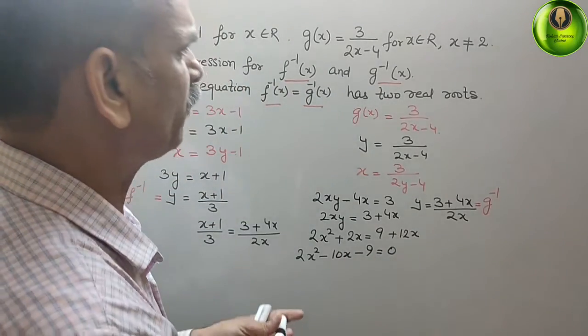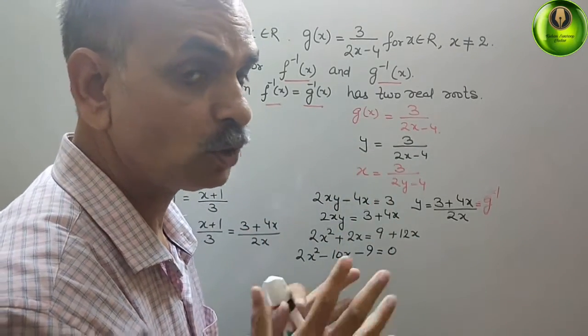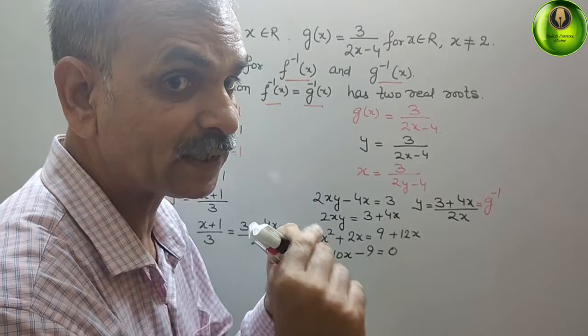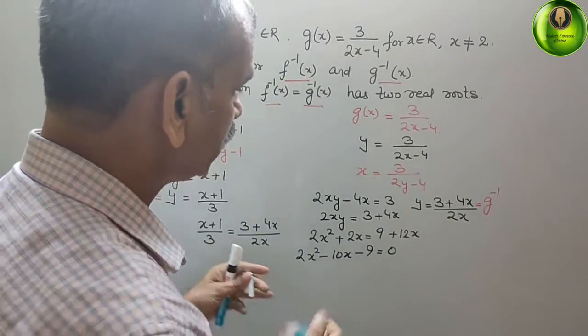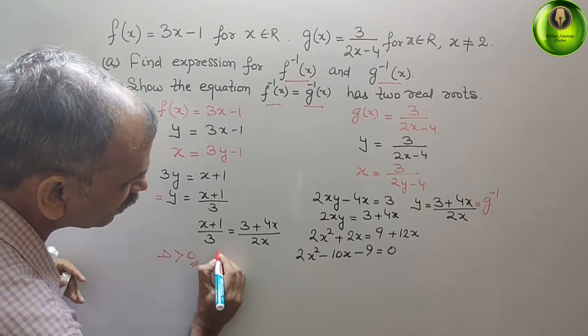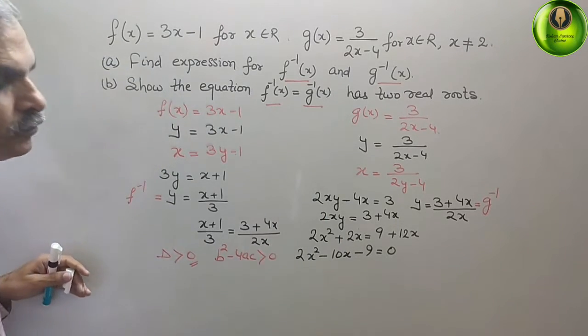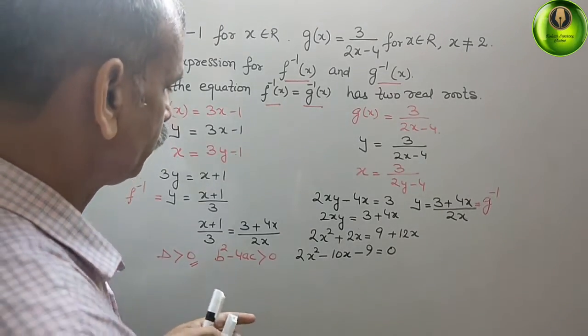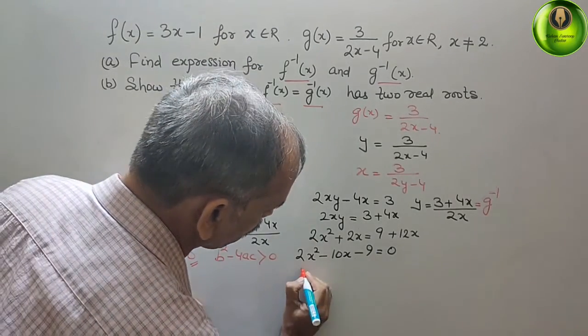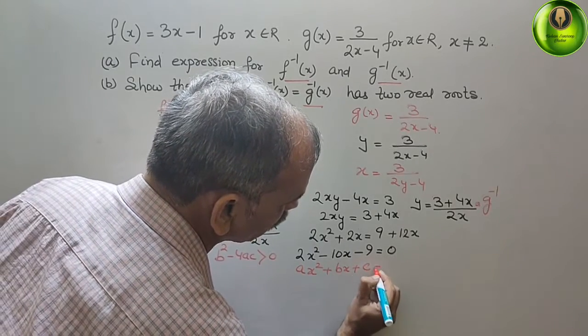Now what they have told? They have told show that the equation has two real roots. The roots are to be real. How? We know quadratic formula, that is your discriminant. The discriminant should be greater than 0. That means b square minus 4ac should be greater than 0. So if you write the standard form of quadratic equation, that is ax square plus bx plus c equals 0.